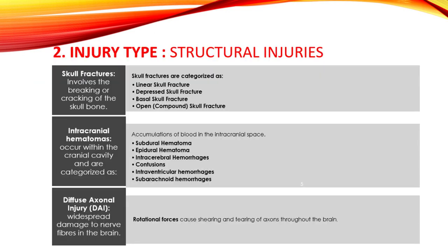Injury types include skull fractures such as linear skull fracture, which has a simple fracture line where there is no depression of the outer skull vault. Depressed skull fracture involves a portion of the skull bone pushed inward. Basal skull fractures are fractures at the base of the skull. Open compound skull fractures are those where a wound communicates with the skull fracture.